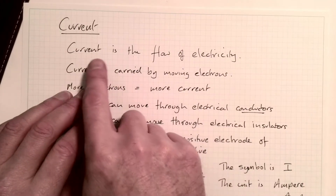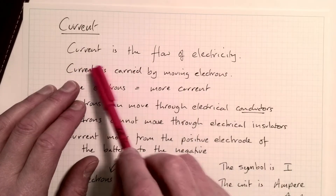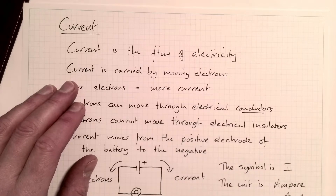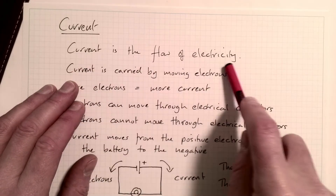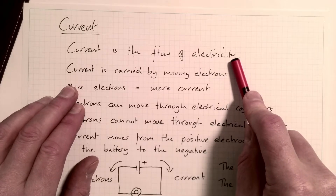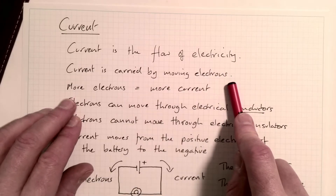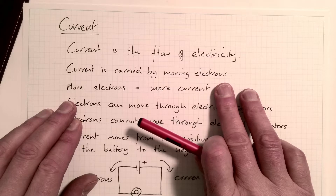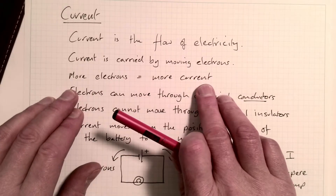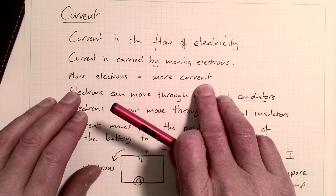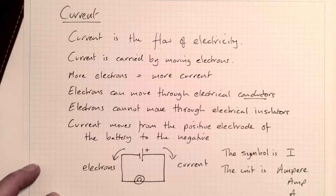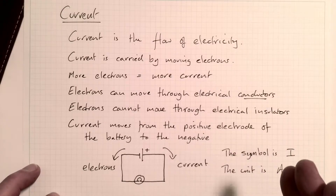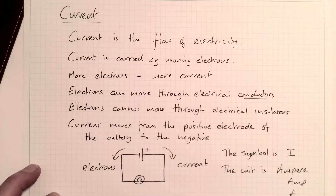So current — current is the flow of electricity. It's the actual particles that carry electricity flowing through the circuit, and the amount of them. It's carried by moving electrons, but the more electrons you have, the more current you have. Current is measured in amps, and one amp is 6 billion billion electrons passing through a certain point in a wire in a second.